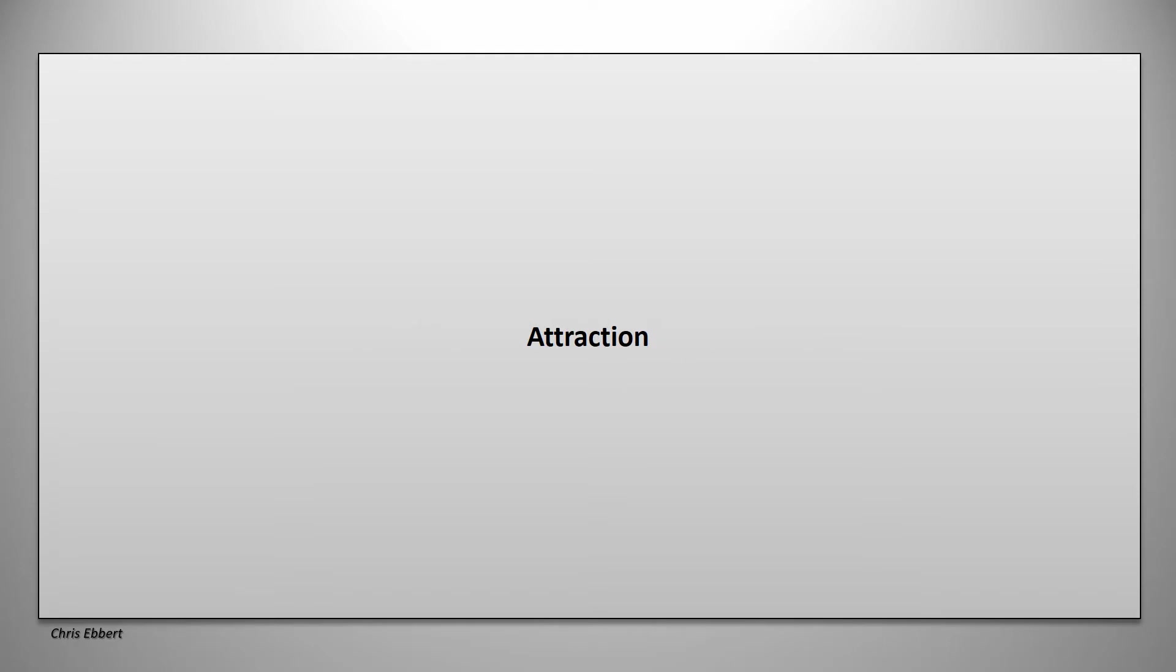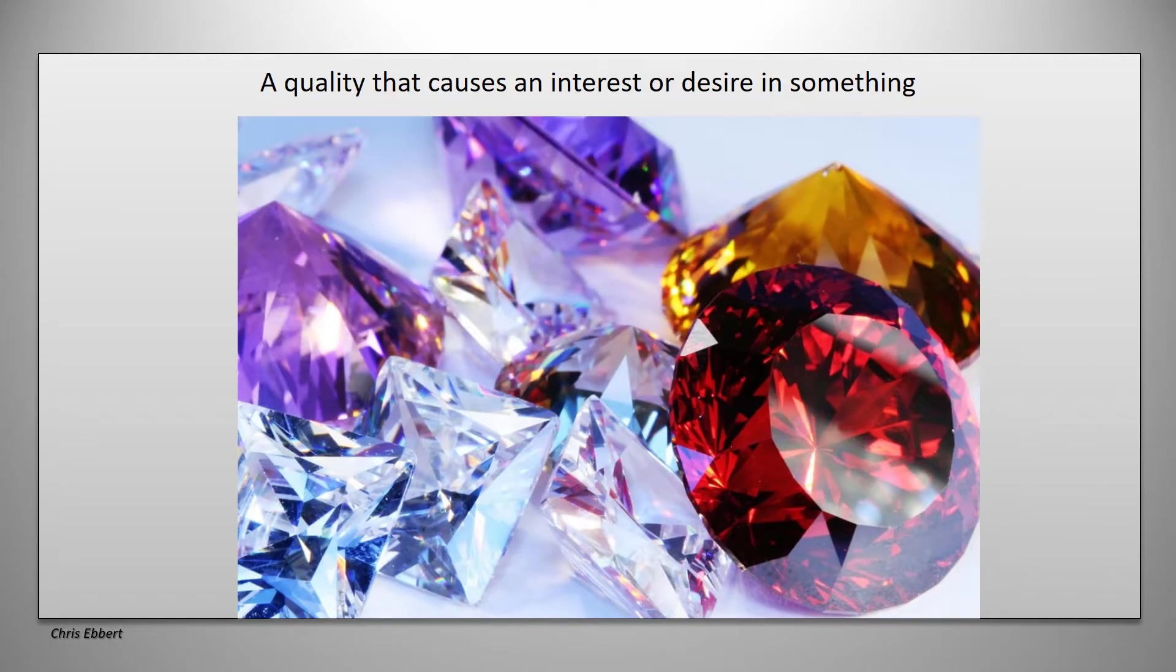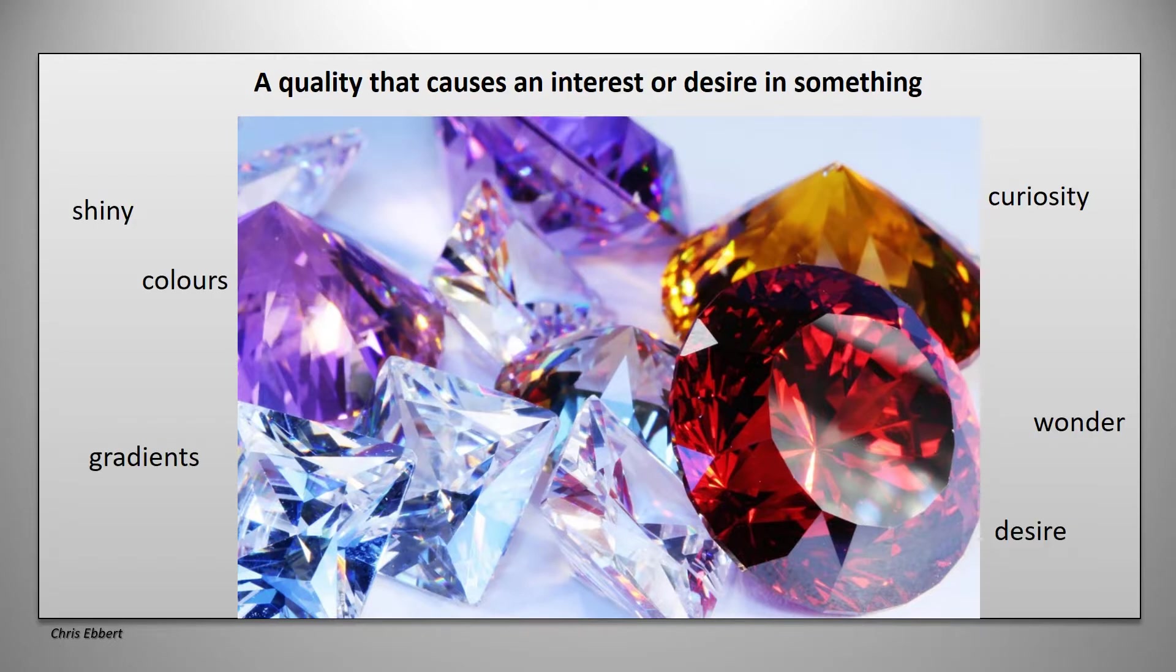And here's how. First of all, create attraction to your product. We humans tick very simply. We will easily desire something if it does all this. If you've read your fairy tales, you know exactly what I mean. If it's shiny. If it's colorful. If it makes you wonder what it is. If you feel curious about it. If it has gradients in it. Gradients are what happens when you change from one color to another. Or from one color darkness to a lighter color. Lightness. So that is how you can create desire. Very simply.